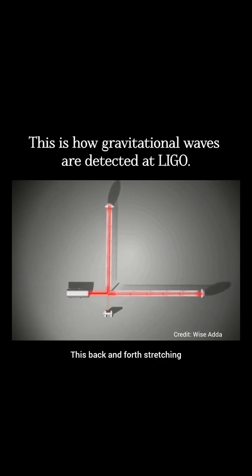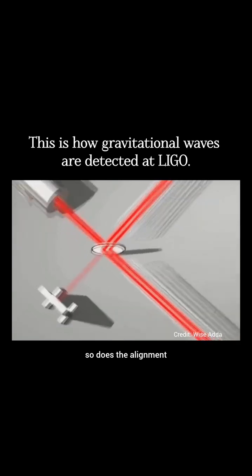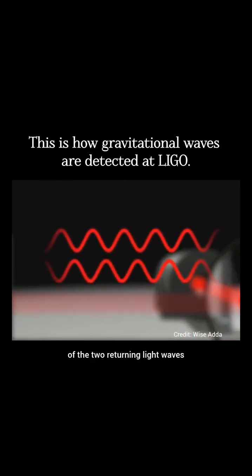This back and forth stretching and squeezing happens over and over until the wave has passed. As the distances change, so does the alignment between the peaks and valleys of the two returning light waves.